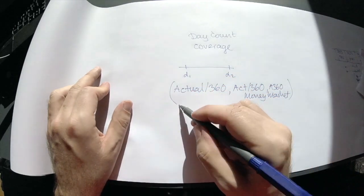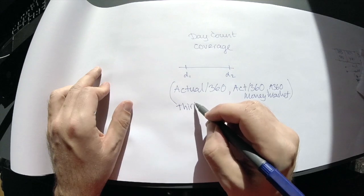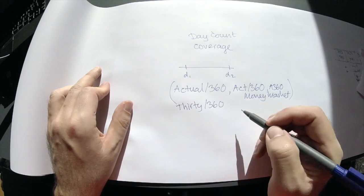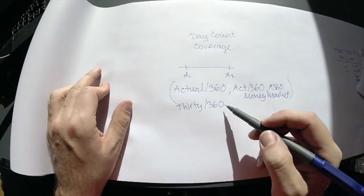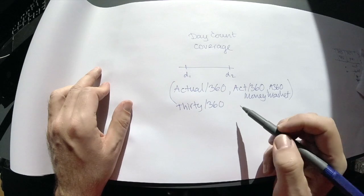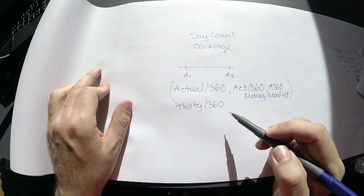Another commonly used convention is the 30/360. If you compare those two, you can see they both assume that a full year is 360 days. That's a rough approximation.